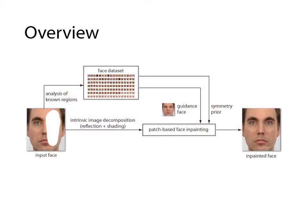Given an occluded face, our approach first analyzes the available region to estimate the high-level facial attributes. It then uses these attributes to retrieve a guidance face from a face dataset. Our approach also decomposes the face image into reflection and shading layers, on which patch-based face inpainting is done by an MRF optimization with the help of the guidance faces for providing extra repairing patches. The result is a naturally inpainted face.